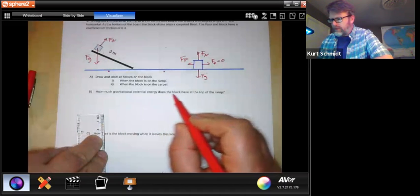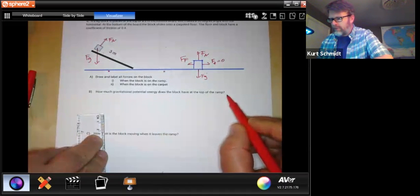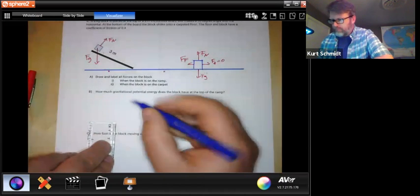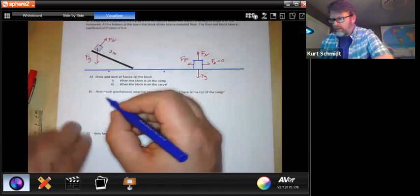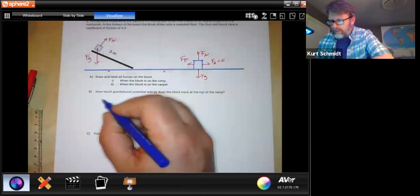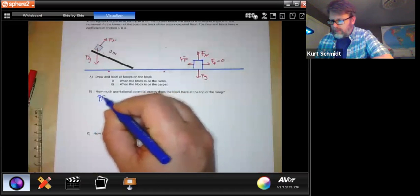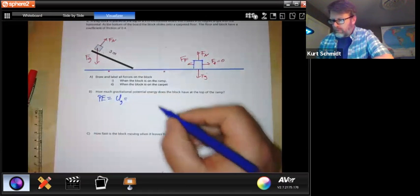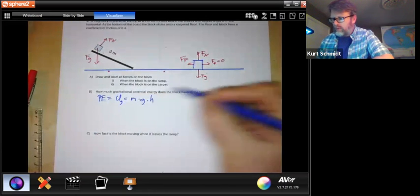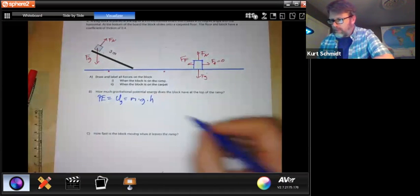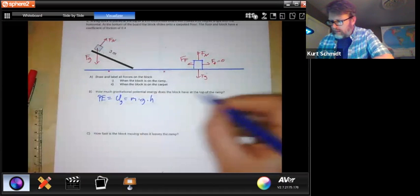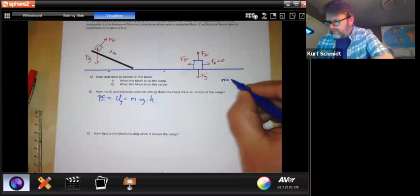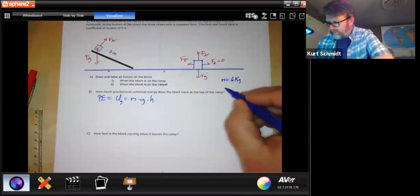How much gravitational potential energy does the block have at the top of the ramp? Well, now we can look at this. We know that gravitational potential energy, I like to write it like this. Some people are going to write it as that. Either way, we're going to have to do this. So we know the mass of the block. Always useful to write some of these things down.